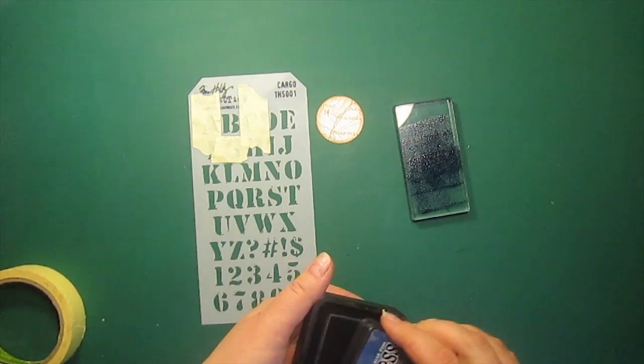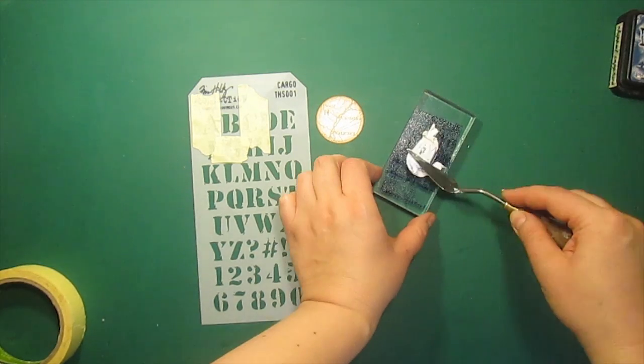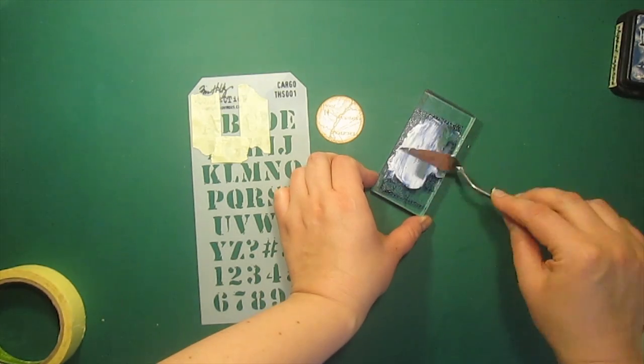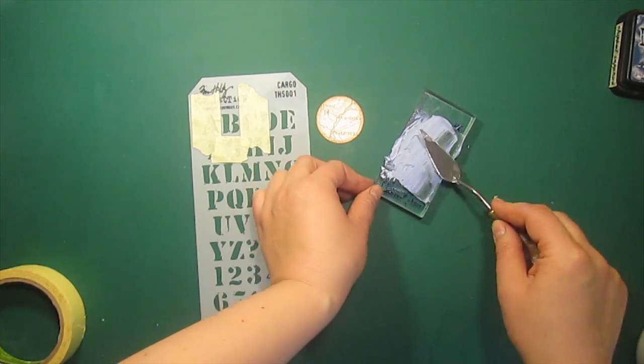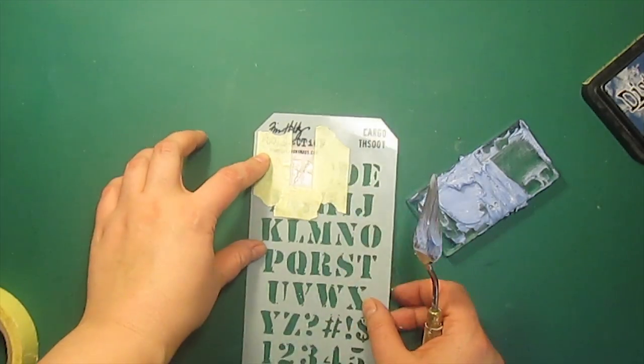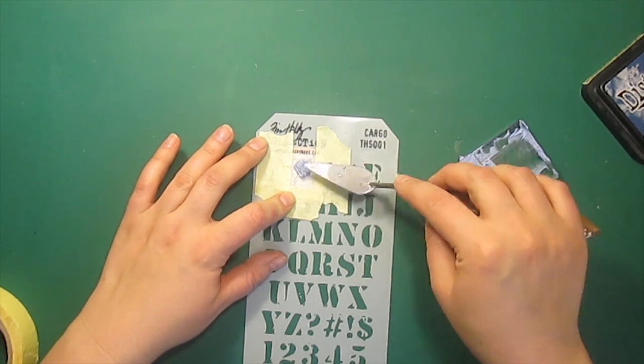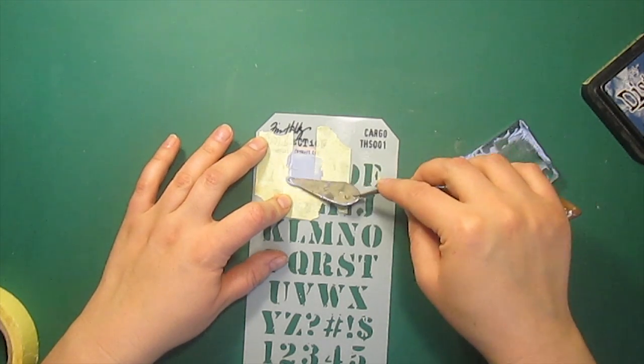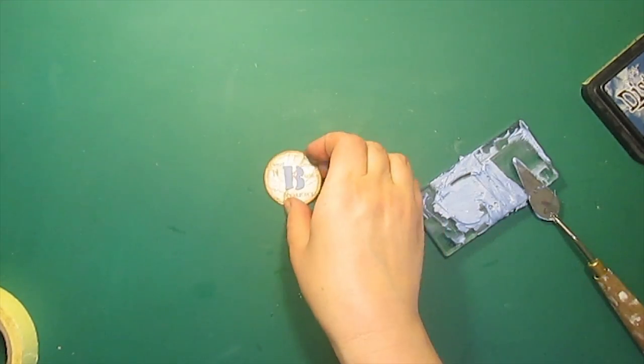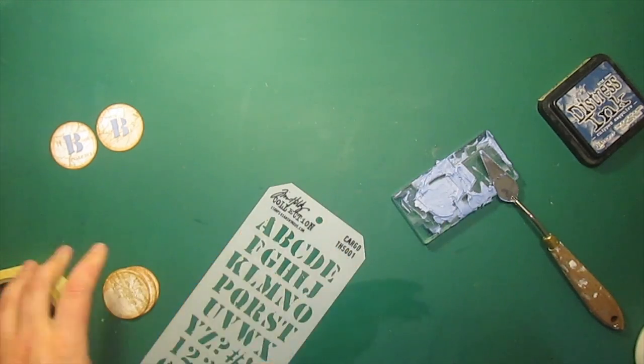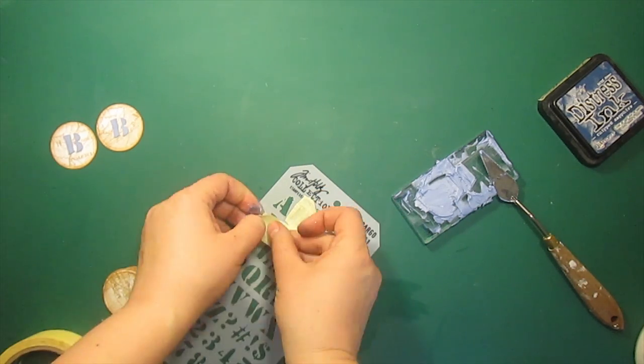Now I am mixing cheap sapphire distress ink and some white texture paste to get a nice shade of blue. I'm cleaning the stencil with a baby wipe and then I'll repeat this process for all the other letters.